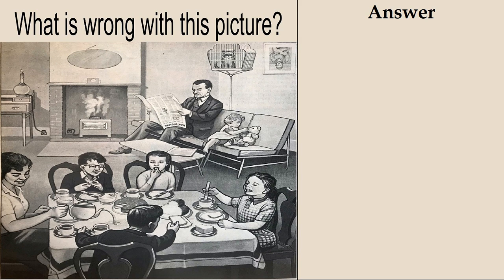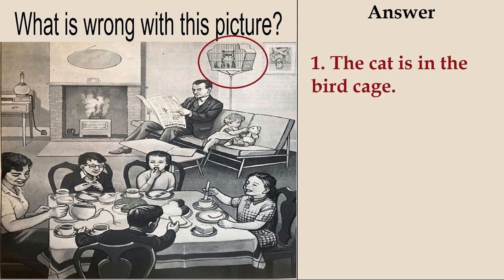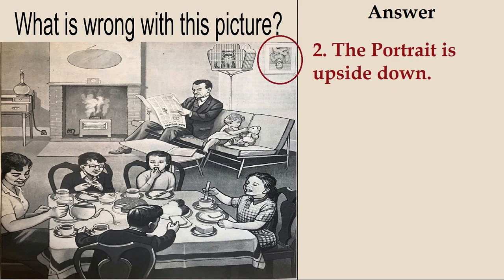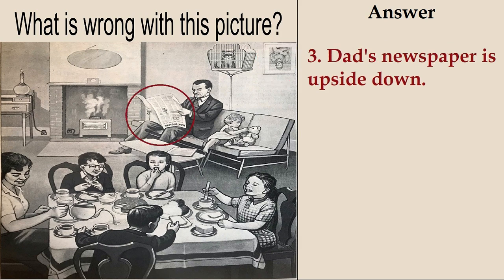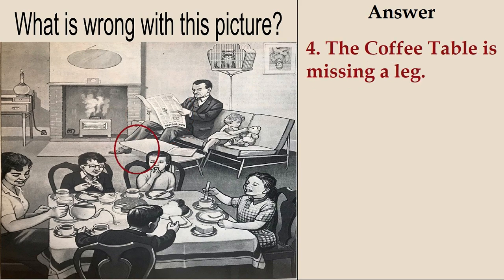The first one is the cat is in the bird cage. Second, the portrait is upside down. Third, dad's newspaper is upside down. Fourth, the coffee table is missing a leg.